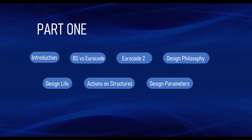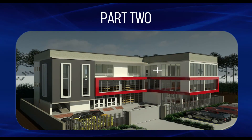Under design parameters we talk about the minimum cover, strength of steel, strength of concrete, factors of safety, design resistance to fire, and all those preliminary items. All of that comes under Part 1. The second part of the course is the most interesting part, because this is where we are going to start the practical content.